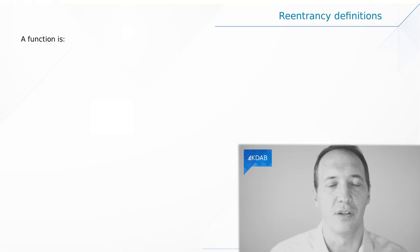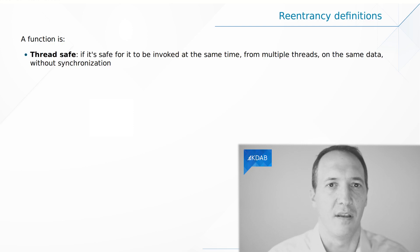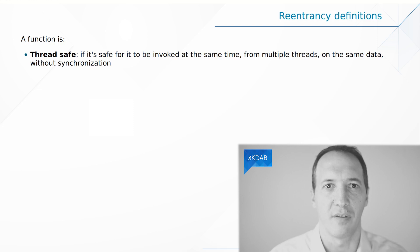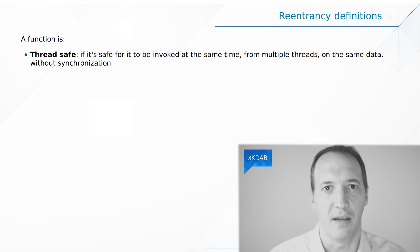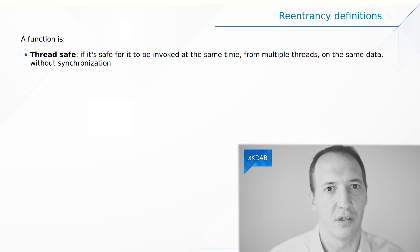Let's have a look at a few definitions. The first one is thread safe. A function is thread safe if it can be called from multiple threads without any kind of synchronization, even though it's working on the same data. Usually that means there is some synchronization inside of the function.